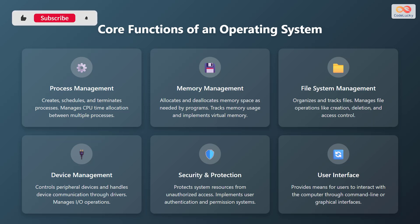Operating systems perform a variety of critical functions to ensure the smooth operation of a computer system. These include process management, which involves creating, scheduling, and terminating processes, as well as managing CPU time allocation. Memory management allocates and deallocates memory space as needed by programs and tracks memory usage.